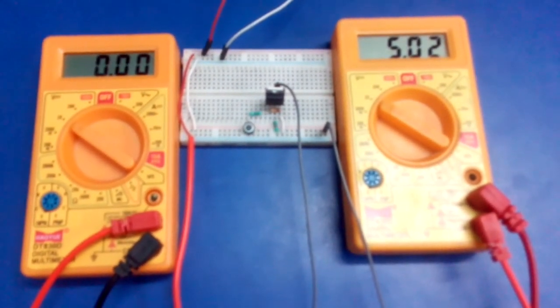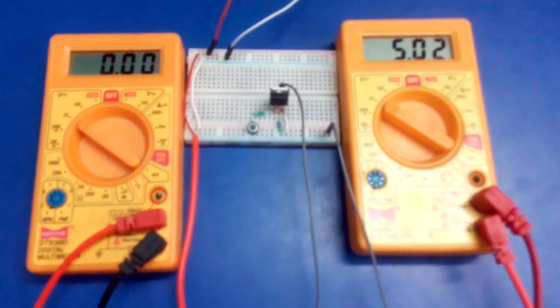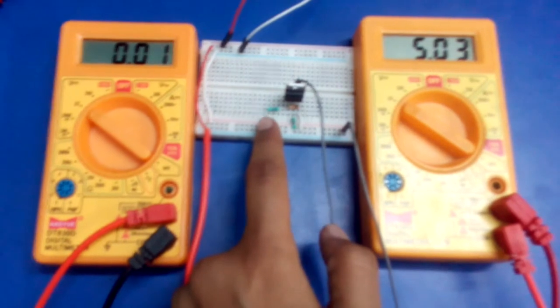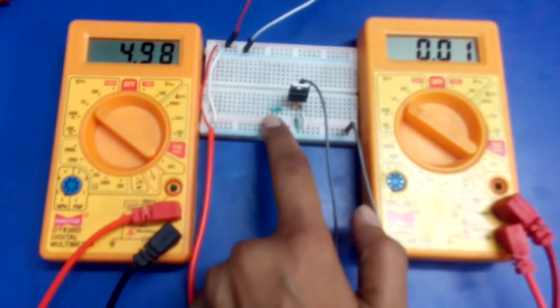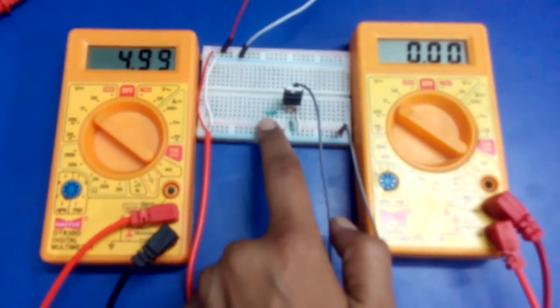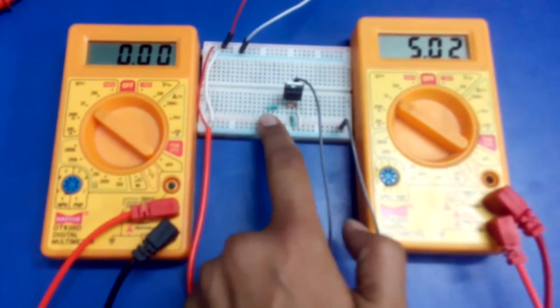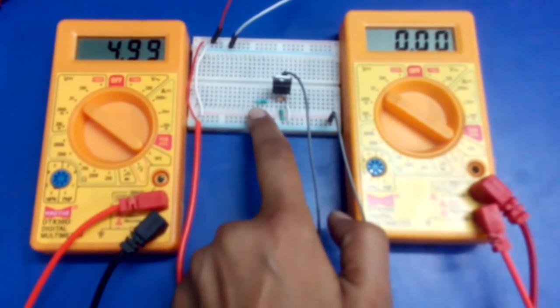If we trigger the gate of this MOSFET by this push button, then all the input voltage is now dropped across the load and we are getting zero volts at drain. That's how we can drive the low side configuration of MOSFET.